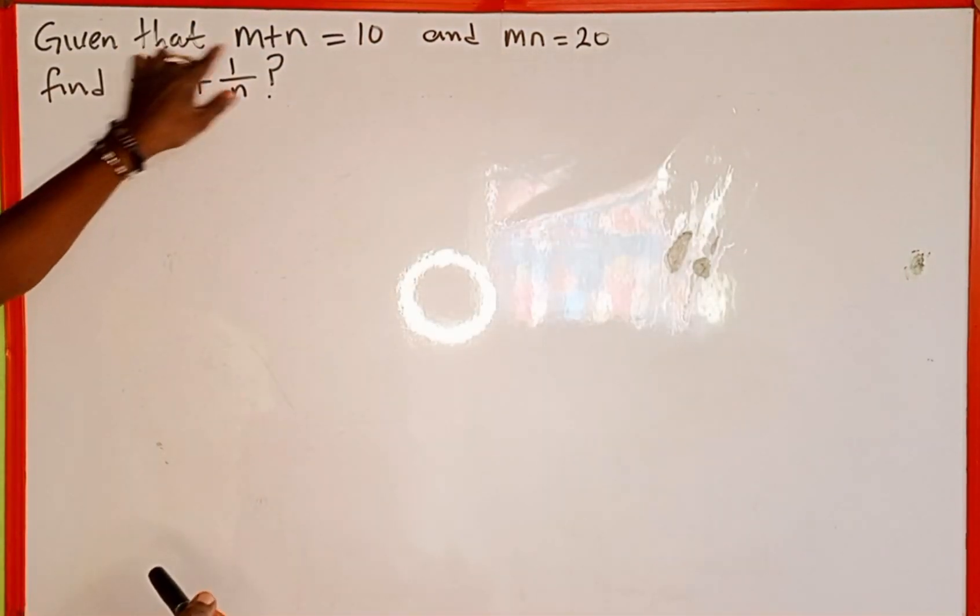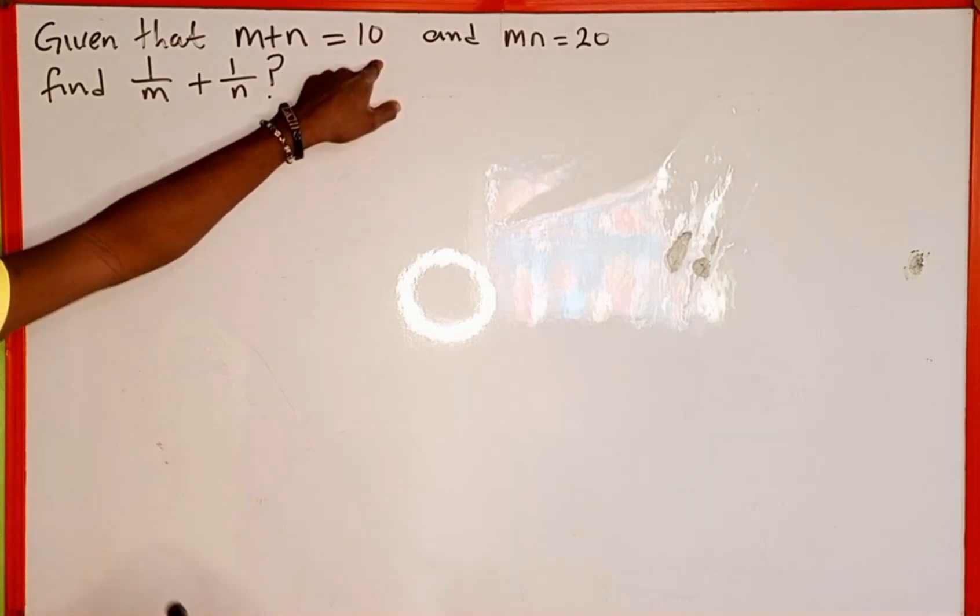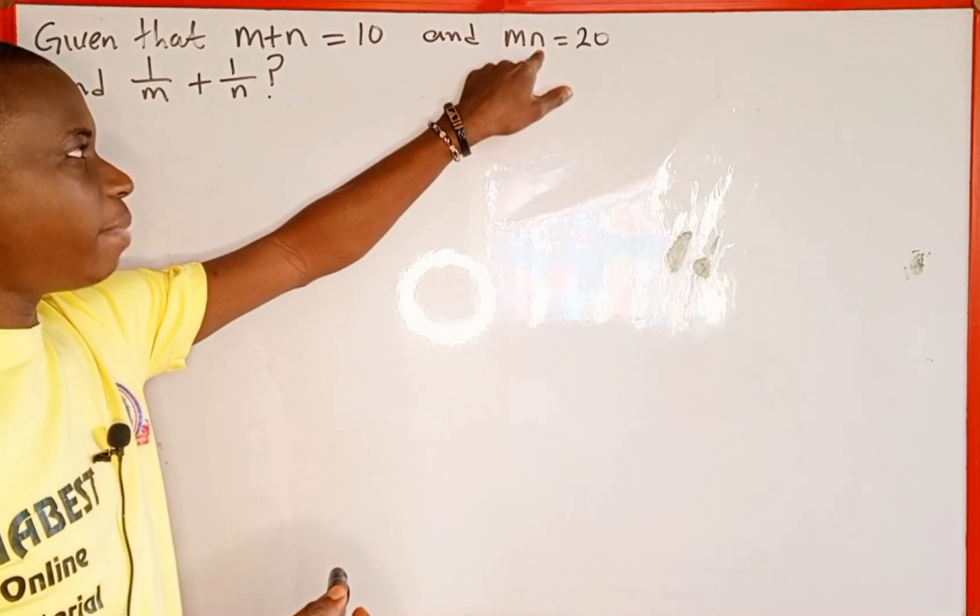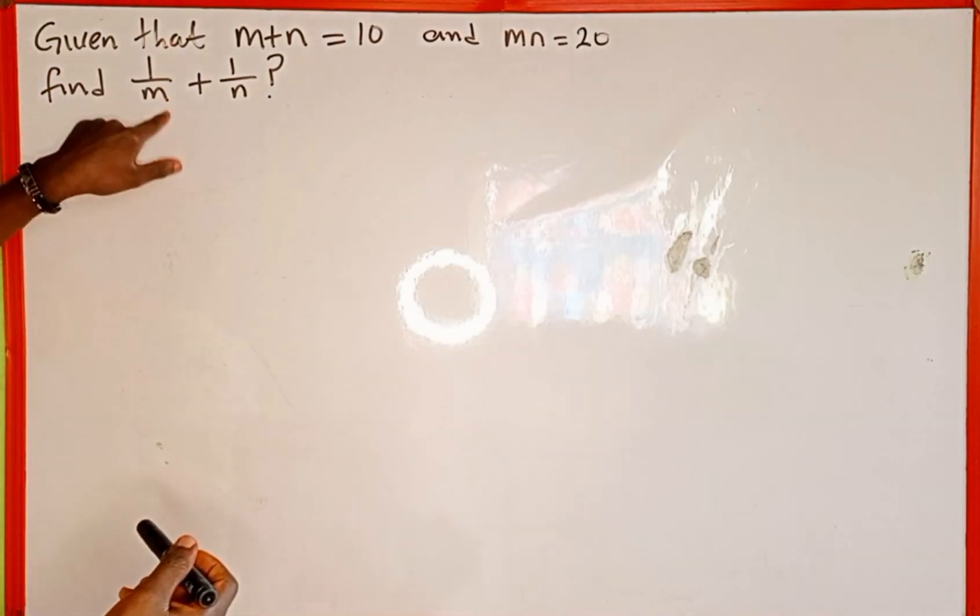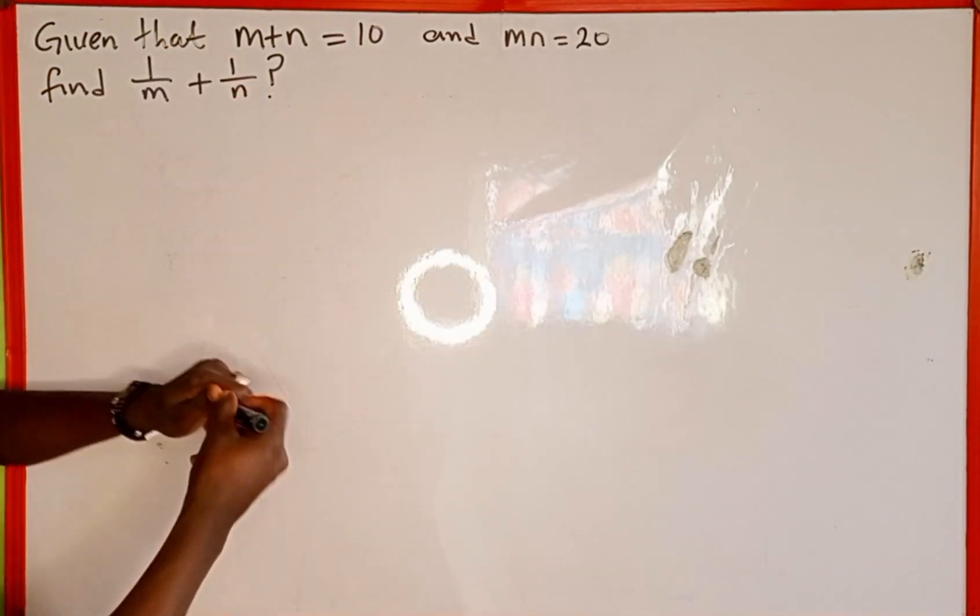The question reads: given that m plus n equals 10 and m times n equals 20, find 1 over m plus 1 over n.